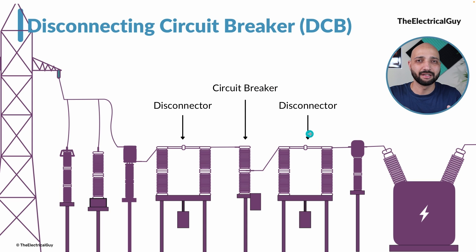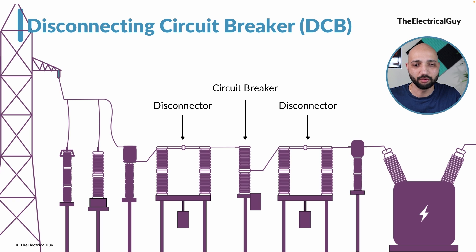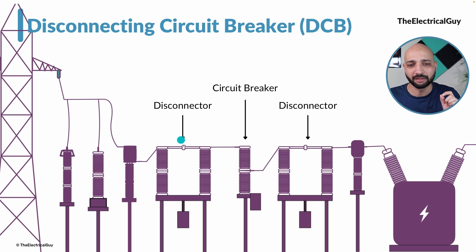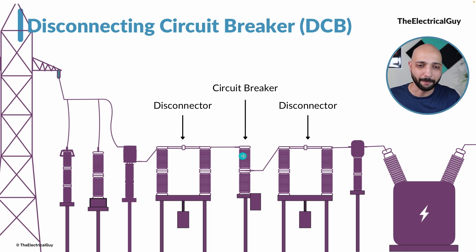You will generally find that a circuit breaker is surrounded by disconnectors on both ends — from this end and from this end, as you can see on the screen. This is one disconnector, then the circuit breaker in between, and again a disconnector here. Whenever regular maintenance was needed on the circuit breaker, you had to open both disconnectors and then carry out the maintenance, which sometimes broke supply continuity.